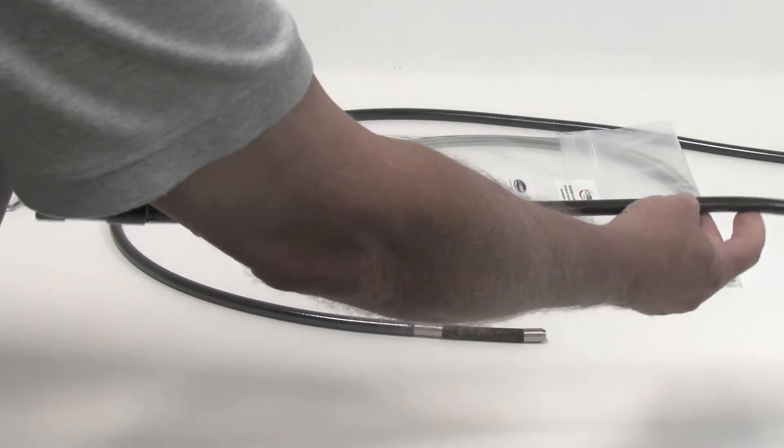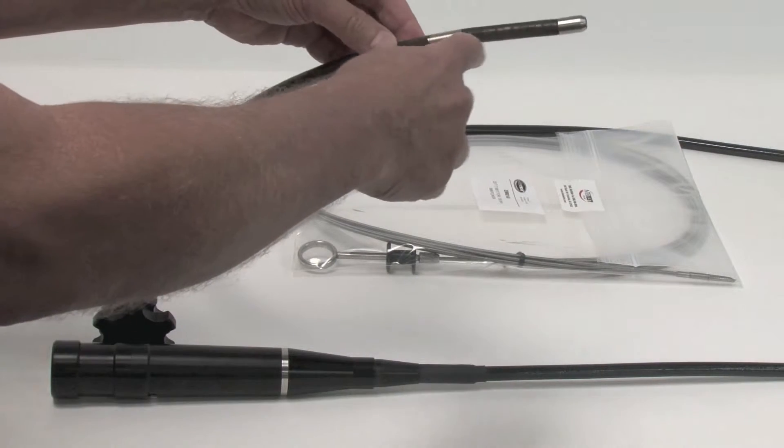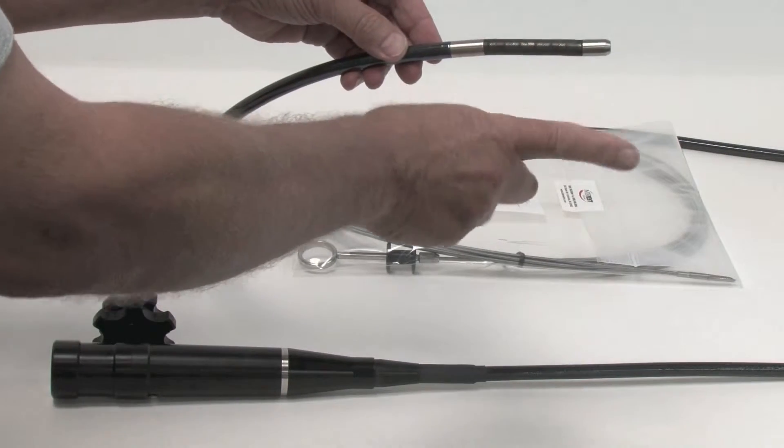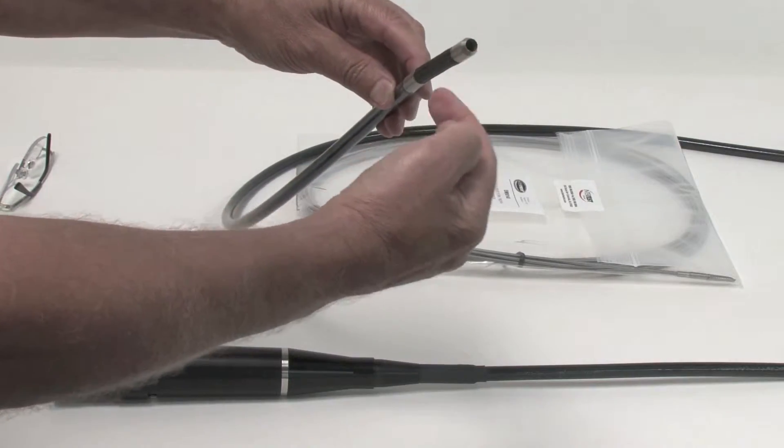The flex section of it is called the insertion tube. At the exit end or distal end we have a bending neck. The bending neck is where the tool actually bends, and then the distal exit is as we see it here.